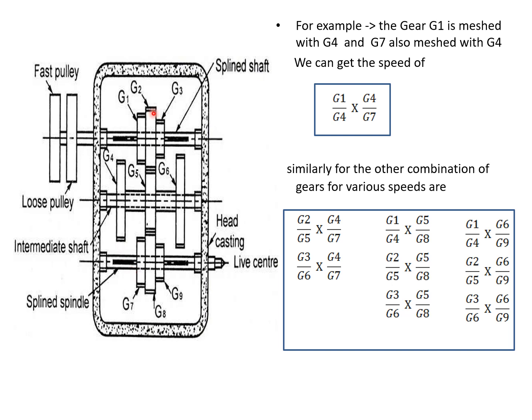Then, G1 by G4 into G5 by G8. Similarly, G2 by G5 into G5 by G8. And, G3 by G6 into G5 by G8.